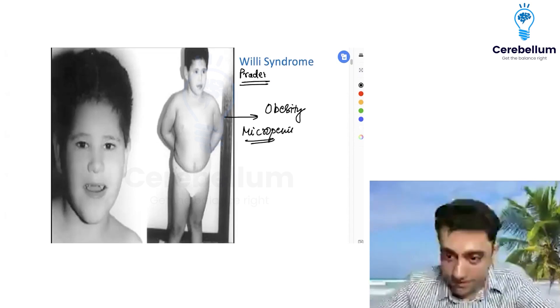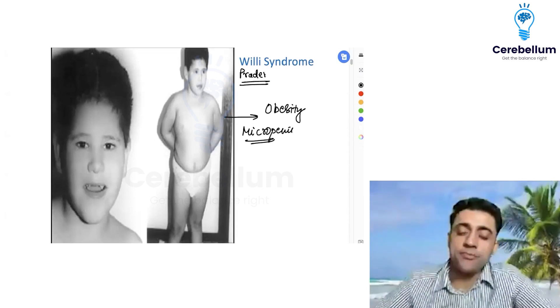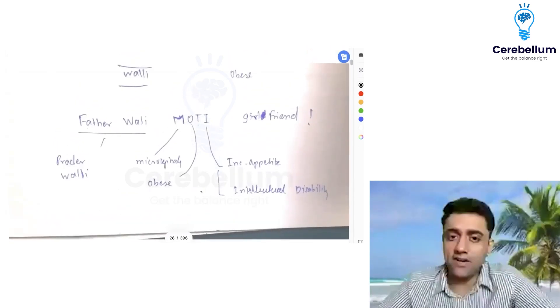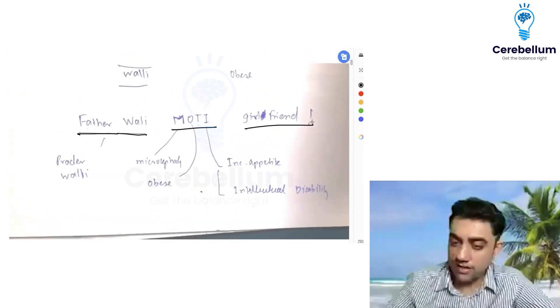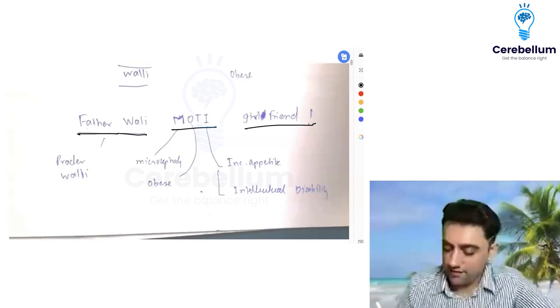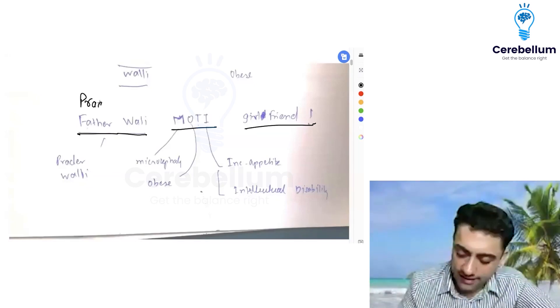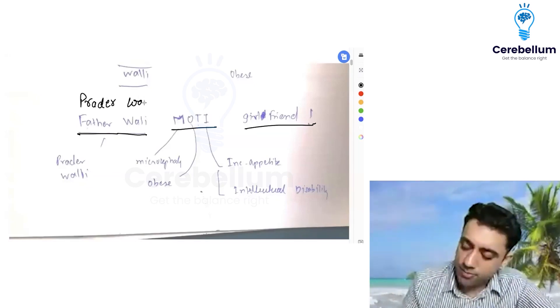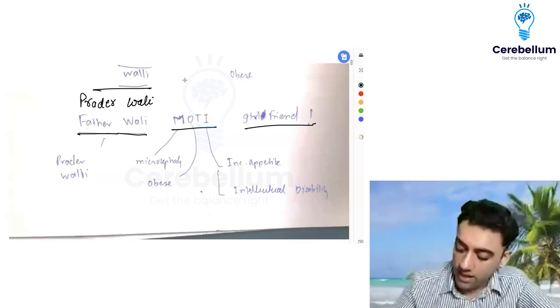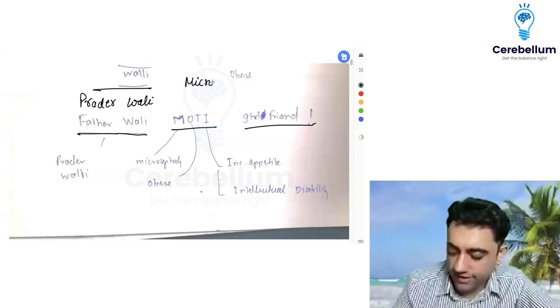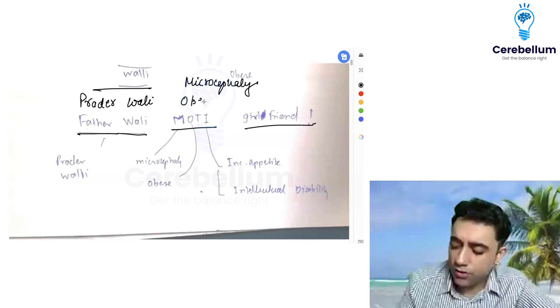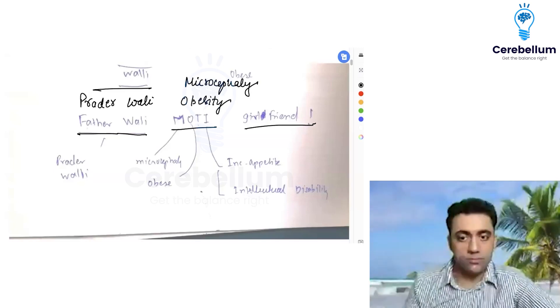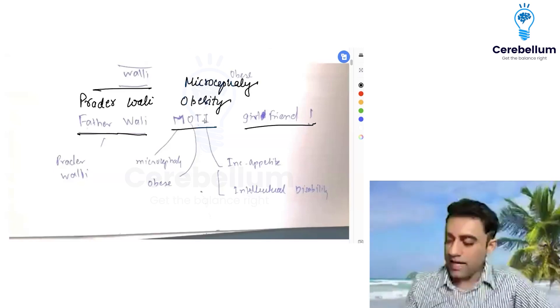Prader-Willi - the mnemonic is MOTI. M for microcephaly, O for obesity. As I told you, the patient has obesity, so microcephaly and obesity.